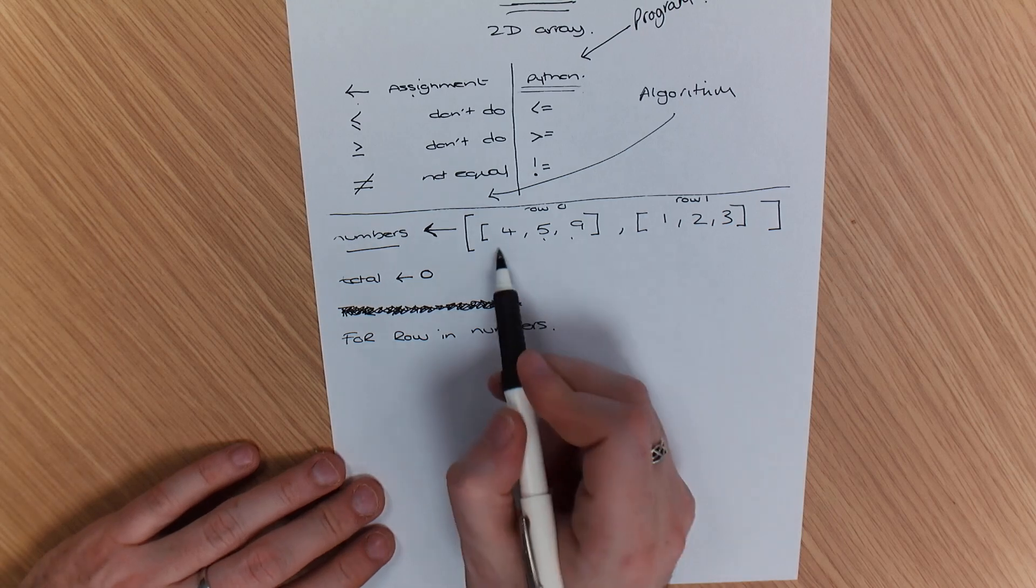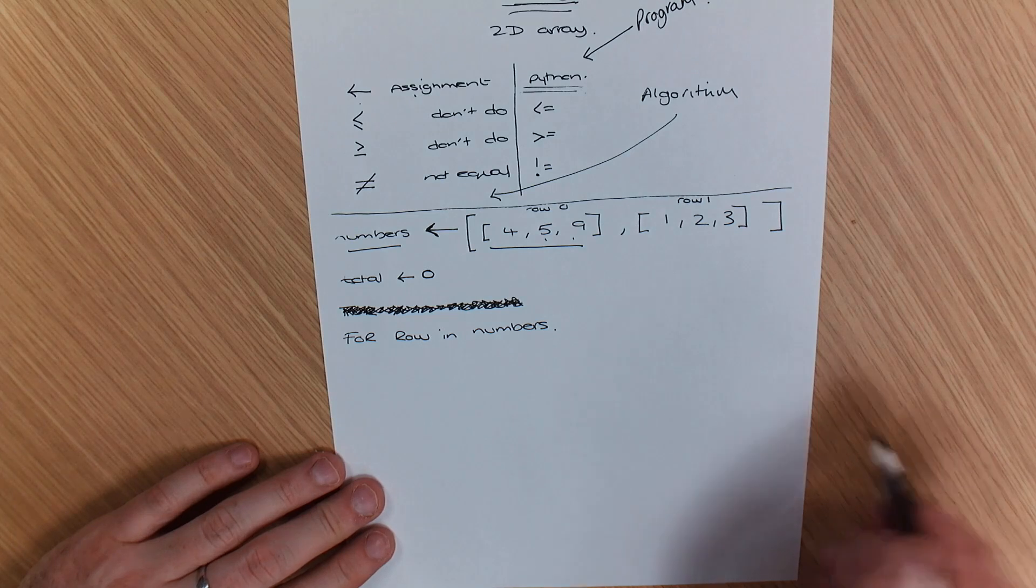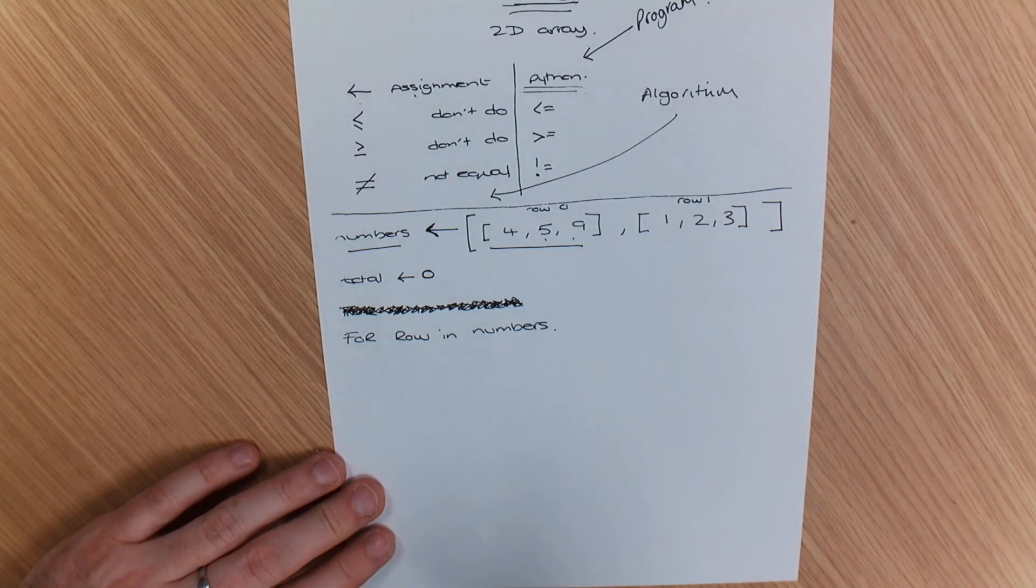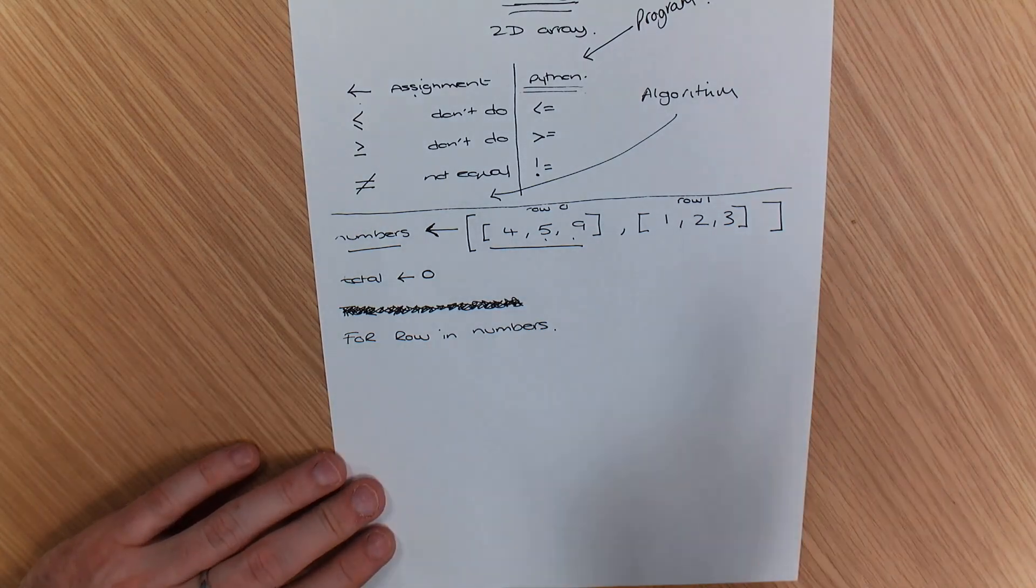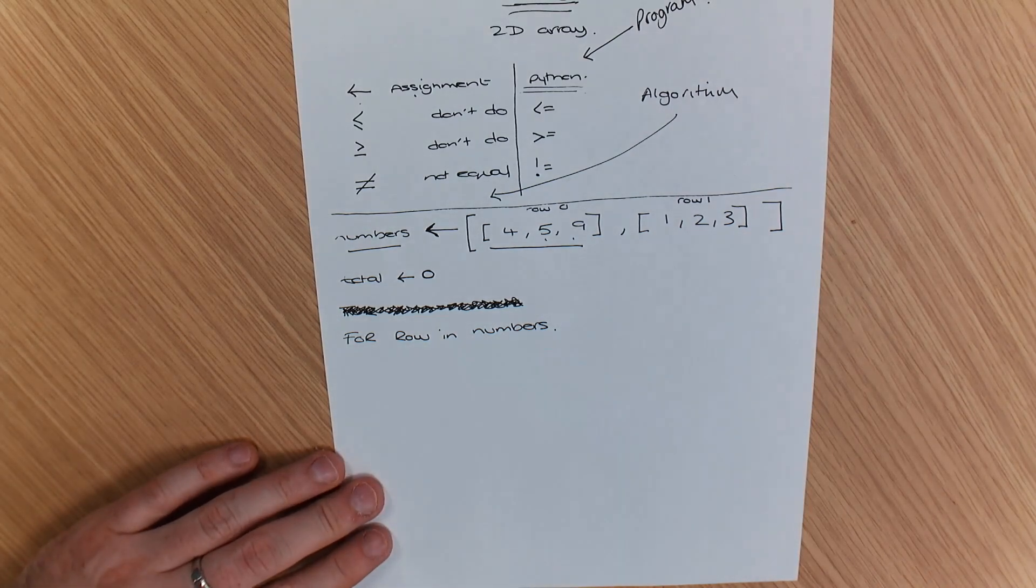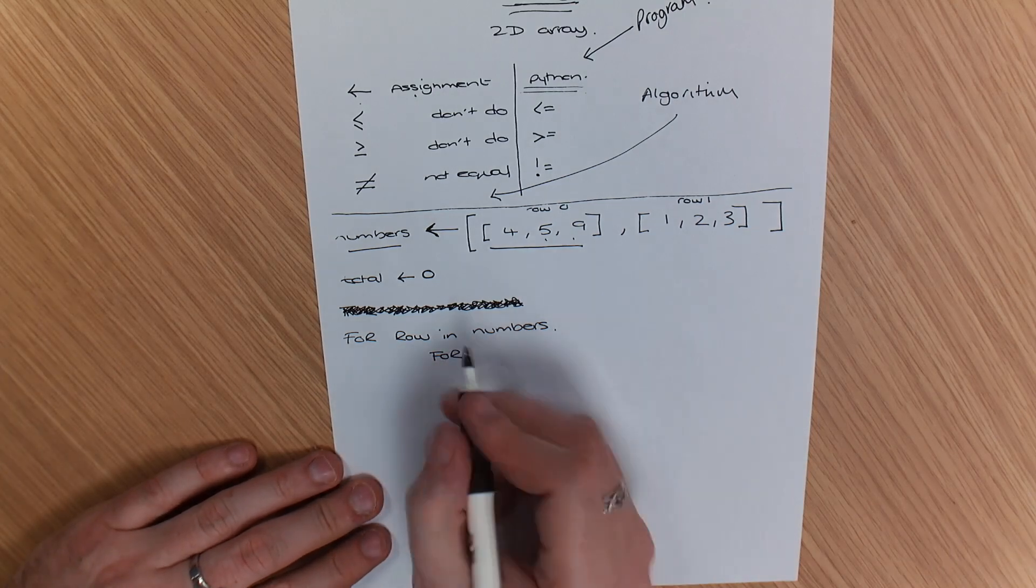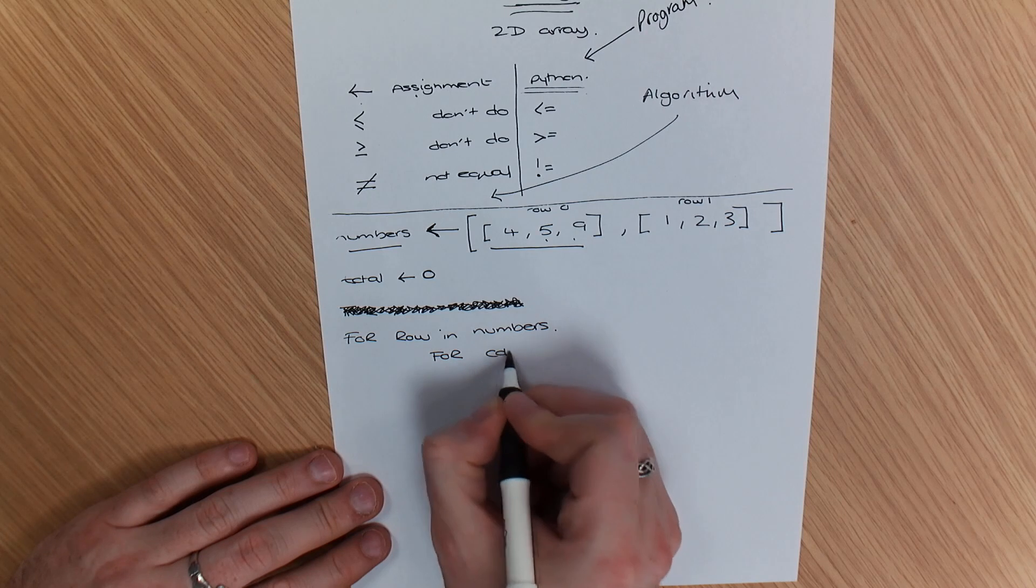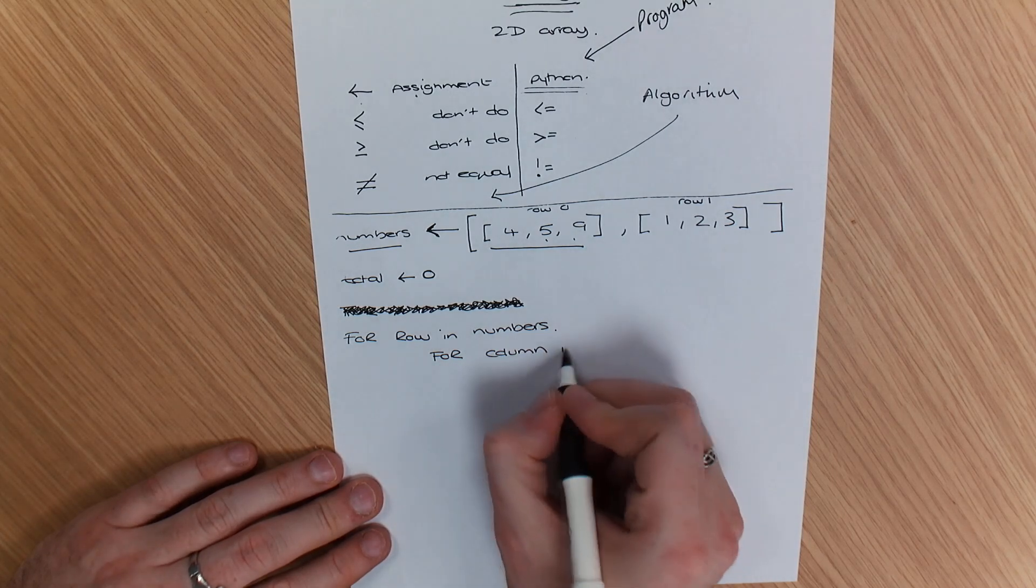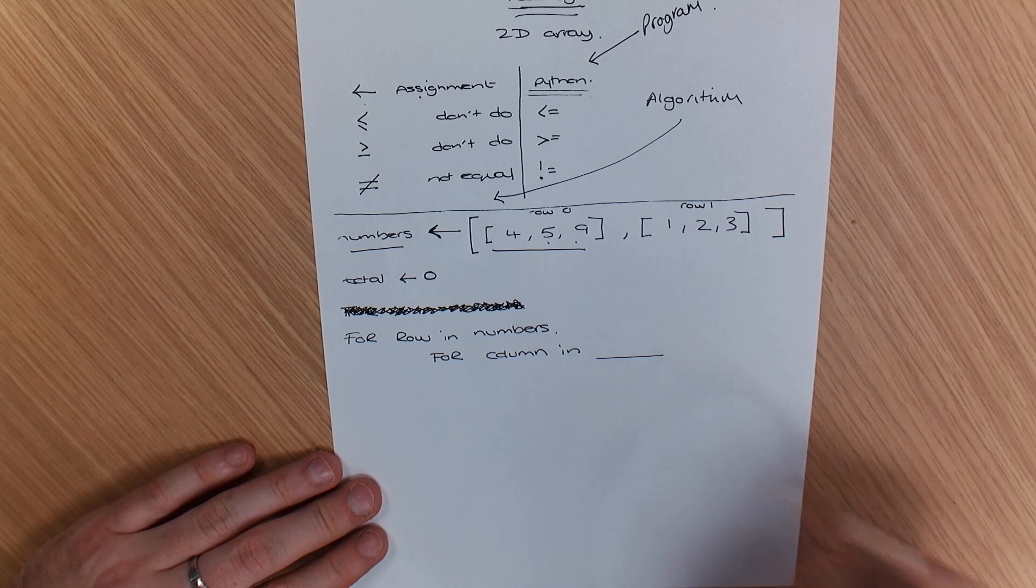That's basically what you're saying for this row. So what that's going to do is it's going to go through this one first, but in order to go through your columns, you have another loop within another loop. So we're going to have for column in, what's the end word going to be? What am I going to write there?